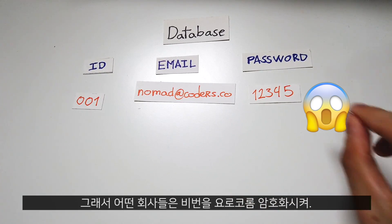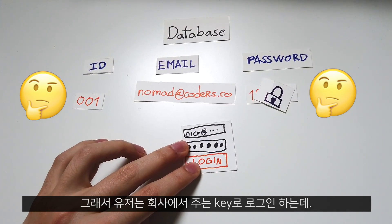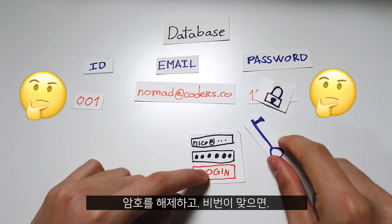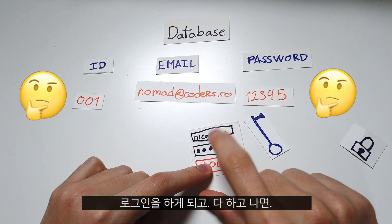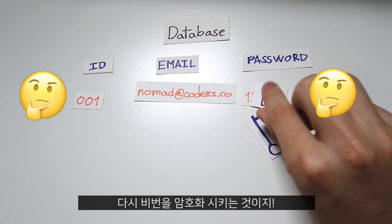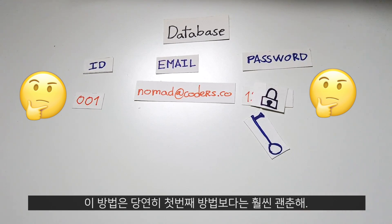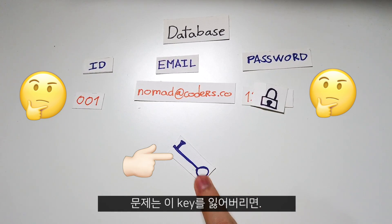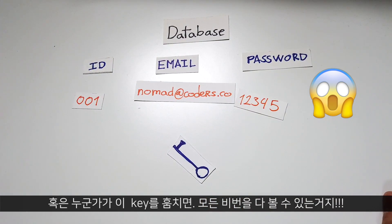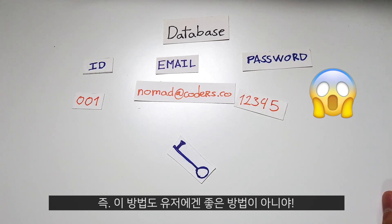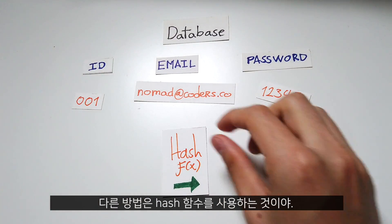What some companies do is that they encrypt the password so nobody can read it. And when the user tries to log in, with the company key we decrypt the password, we compare them, and if they are the same, we proceed with the login. When we are done, we encrypt the password again. This method is more secure than the first one, but the problem is that if you lose the key or if somebody steals it, they can just open all the passwords from the database — again, not good news for your users. What you can do instead is to use something called a hash function.